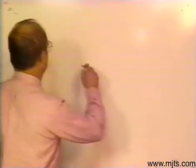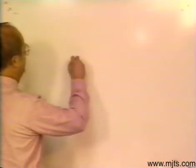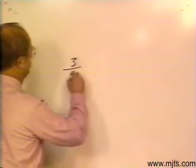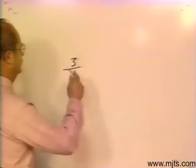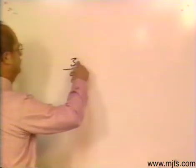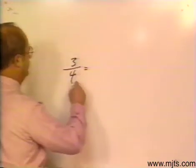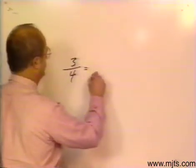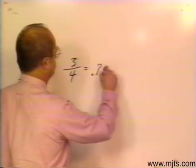Now let's work with our fractions and convert them to decimals. If I have a fraction 3 fourths, I can show its decimal equivalent by dividing 4 into 3. If I would divide 4 into 3, I would have an answer of 0.75.